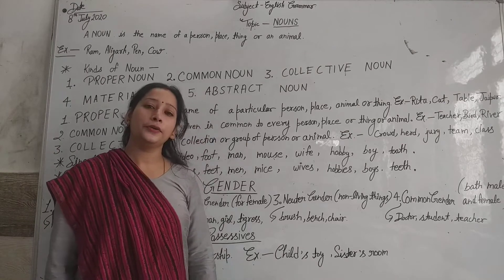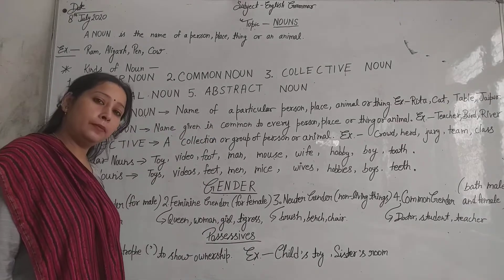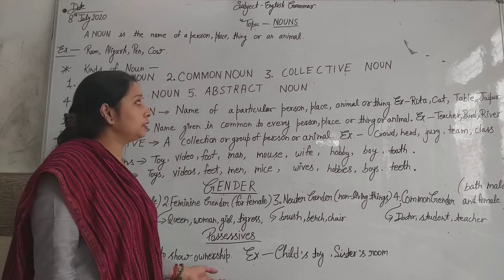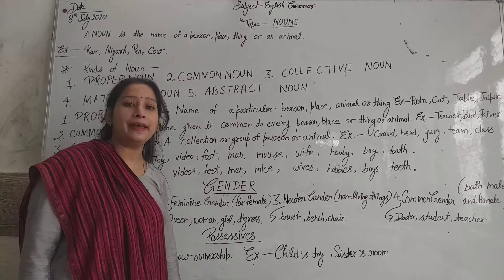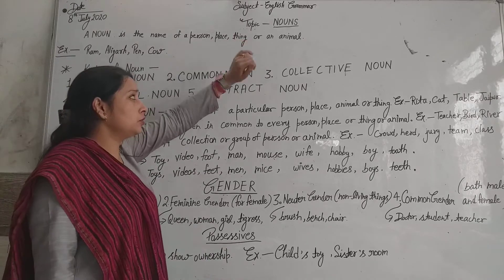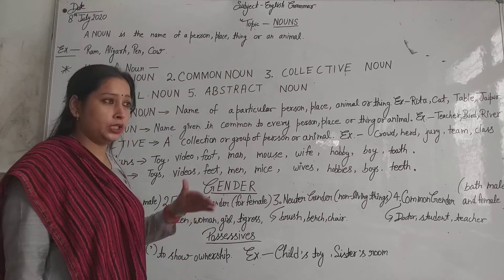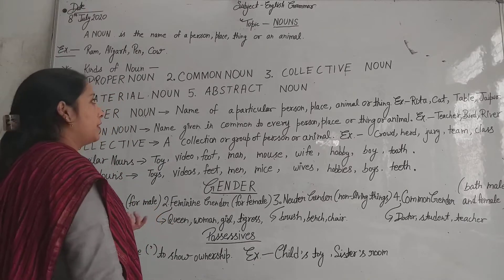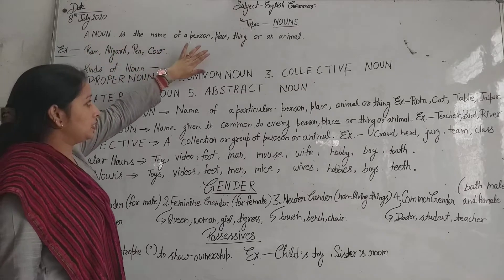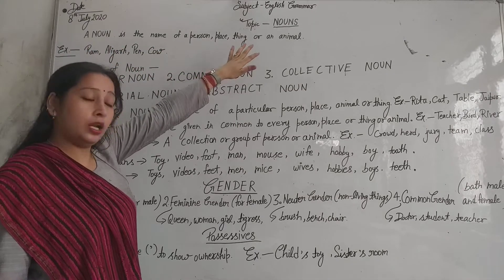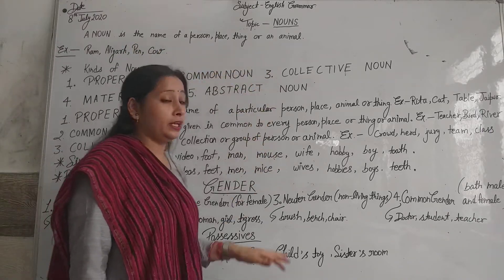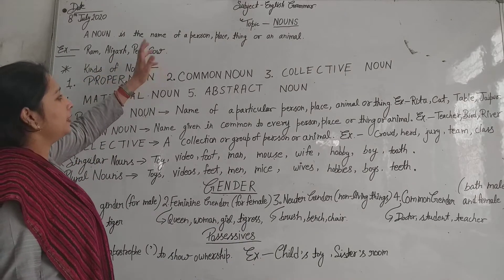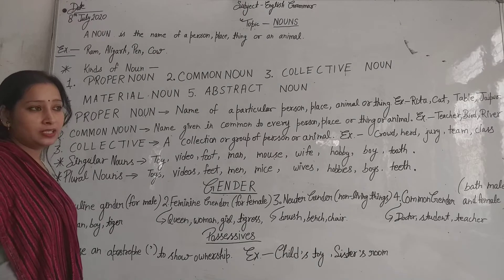Hello, good morning friends! Welcome back to our online classes. Today we are going to discuss about nouns. As you all know, we have completed this chapter in our favorite books, so today we are going to revise. Noun is the name of a person, a place, an animal, or a thing. For example: Ram, Aligarh, pen, cow — all these words are called nouns.